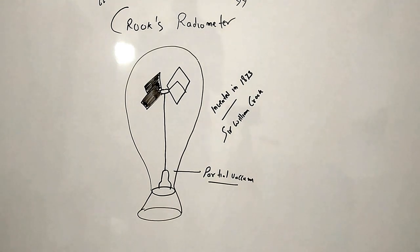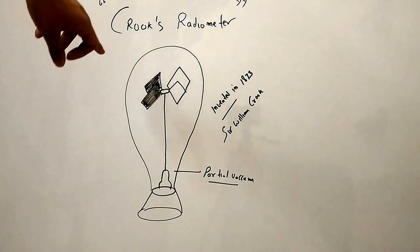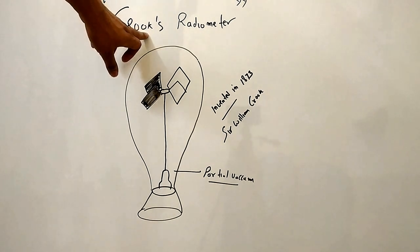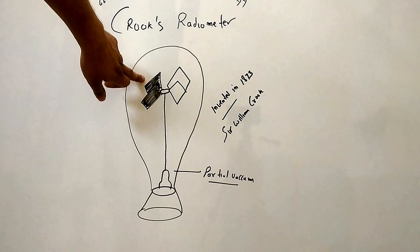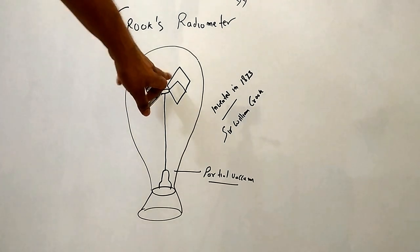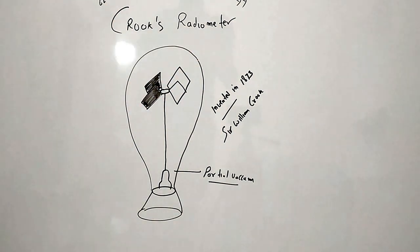Now, we have a radiant energy source, so the black side which is a good absorber, because of the black side absorption versus the white side, the black side will become hotter than the white or silver side.